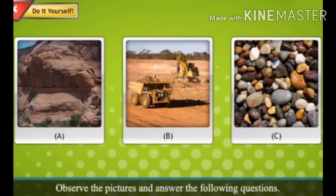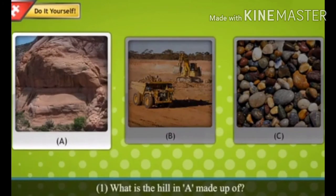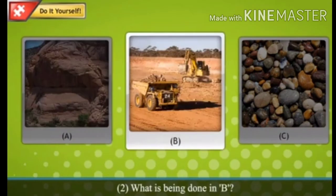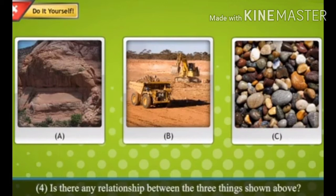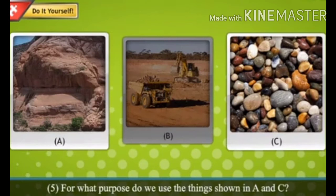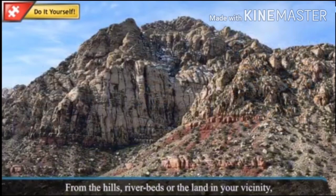Observe the pictures and answer the following questions. What is the hill in A made up of? Second question: What is being done in B? Third question: What do we see in picture C? Is there any relationship between the three things shown above?